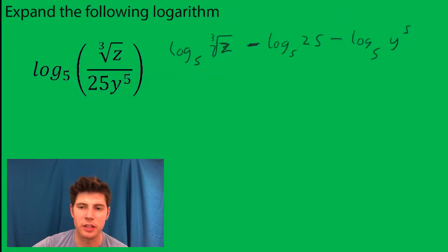Anything on top gets a plus, anything on the bottom gets a minus. Now this is z to the one-third.